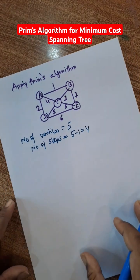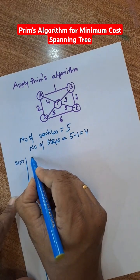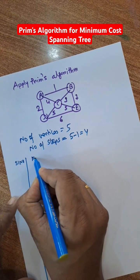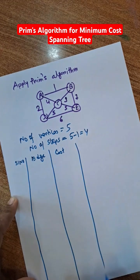This is the easiest step. Serial number—you can calculate this way—serial number, edge, cost, and spanning tree.